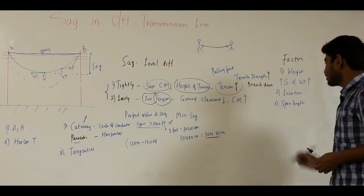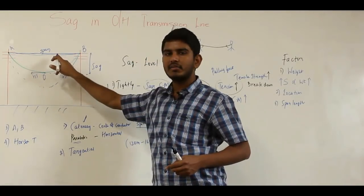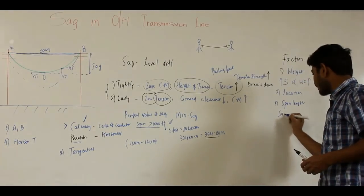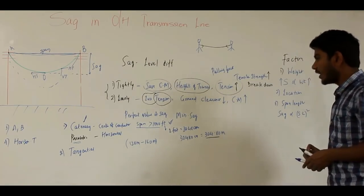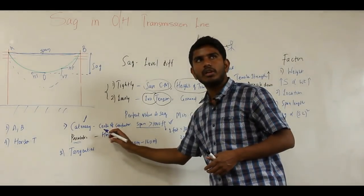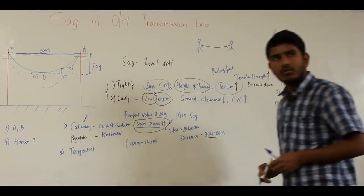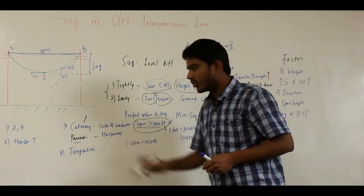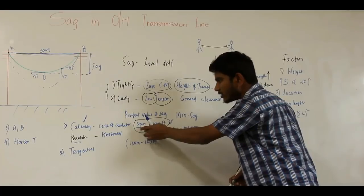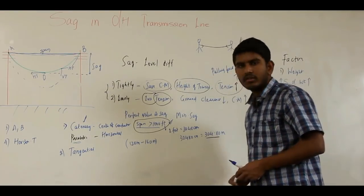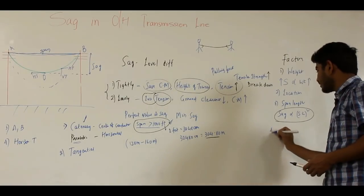The span length also affects sag: more span length means more sag. Sag is proportional to the square of the span length. For greater span lengths (above 1000 feet), the catenary curve gives more accurate results; for lesser span lengths, a parabolic curve is used. Temperature is another factor: as temperature increases the conductor expands and sag increases, while as temperature decreases the conductor contracts and sag decreases. Sag is proportional to temperature. The fifth factor is tensile strength, which is inversely proportional to sag — more tensile strength means less sag. The sixth factor is tension, which is also inversely proportional to sag.